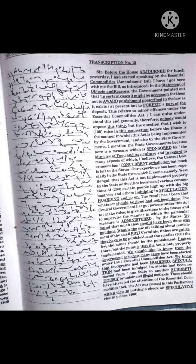The central government has got powers under this act to make rules, to give directions to the states, and to supervise the manner in which this particular measure is administered by the states. We found that much that should have been done was not done. What is the use of talking about punishment of the small fry? Certainly if they are guilty they have to be punished, and the smaller the fry, the minor should be the punishment. I agree there.